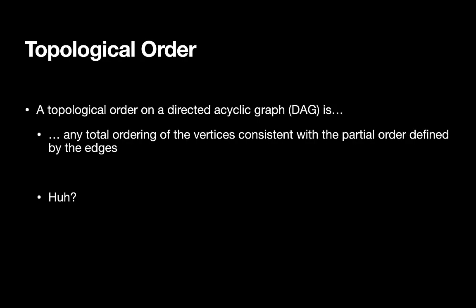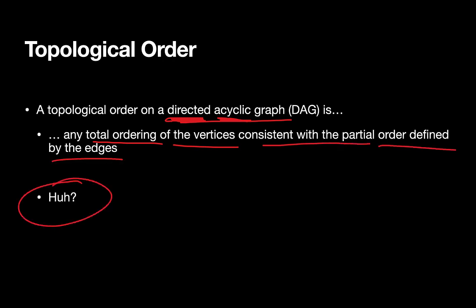Finally, we can get to the idea of a topological order, which is actually an interesting and useful thing — something you've probably encountered and thought about already, maybe without thinking about it formally. A topological order is defined on directed acyclic graphs, so it only makes sense on a directed and acyclic graph. A topological order is any total ordering of the vertices consistent with the partial order defined by the edges.